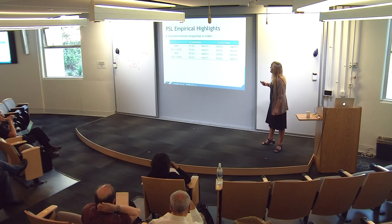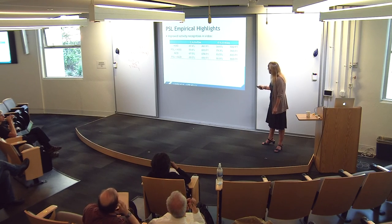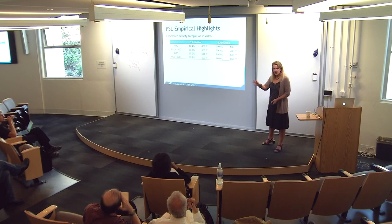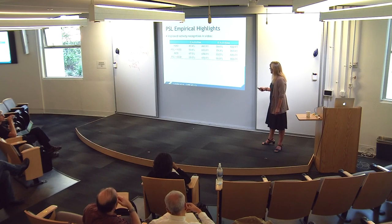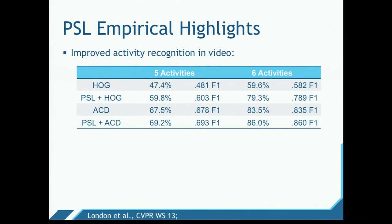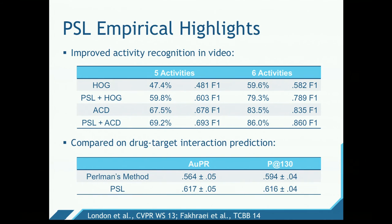Another kind of problem is activity recognition in video. These use state-of-the-art computer vision features. What we did with the PSL model was put a relatively trivial model on top that says: if there's a bunch of people doing something in a video, they're probably doing the same thing; and if they were doing something in one frame, they're probably doing the same thing in the next frame unless you have strong evidence to the contrary. And we get a significant bump up in performance over the baselines. And there's a different kind of problem in computational biology — drug target prediction — where again we're beating state-of-the-art.